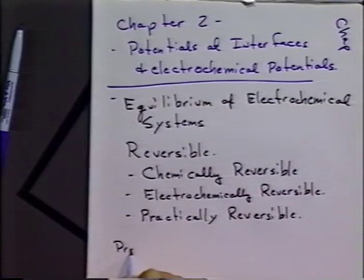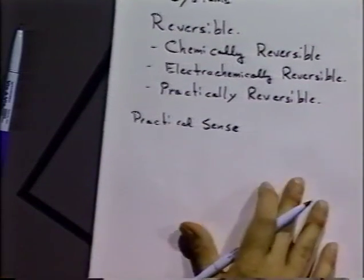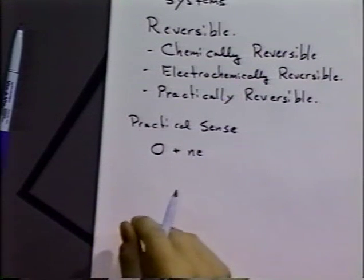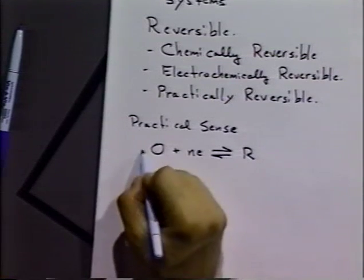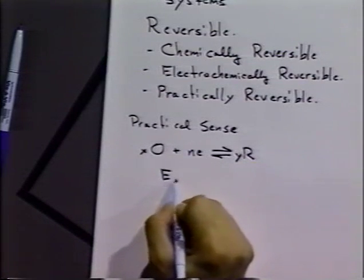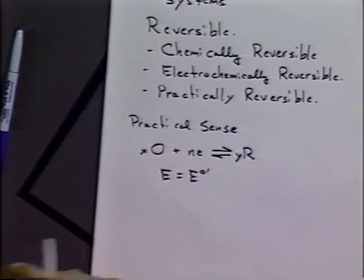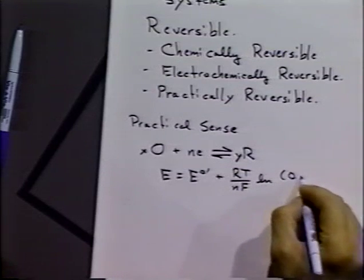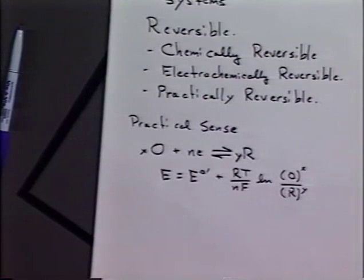In a practical sense, we're interested in systems that follow the Nernst equation. Remember, the Nernst equation can be formulated something like this, where we have a species O, which is an oxidized chemical species, undergoing some sort of electron transfer to be reduced to species R. If we put in some stoichiometric coefficients for that equation, we can write the Nernst equation as follows. The potential of that system, the electrochemical potential of that system is the standard potential of the system, plus RT over NF, natural log, the activity of species O over the activity of species R. And of course, then we'll use our stoichiometric coefficients in that regard.